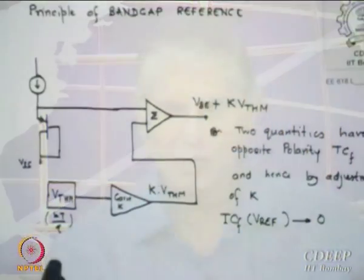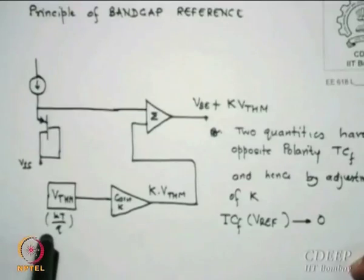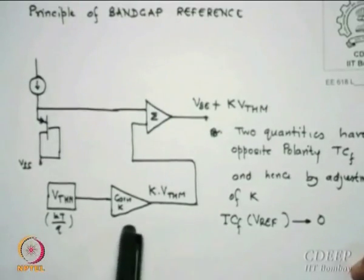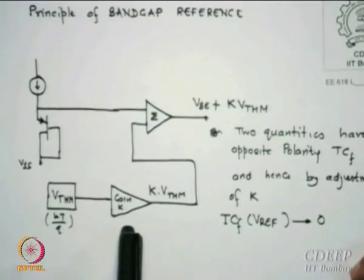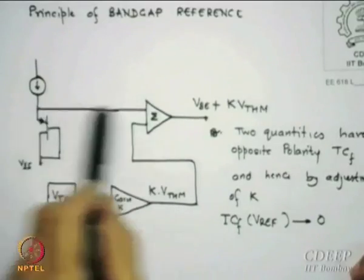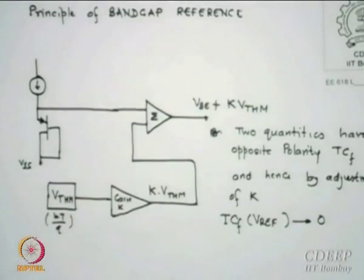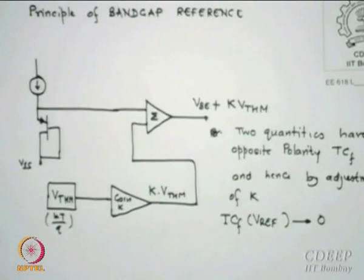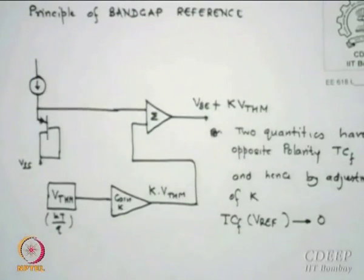Here is the band gap reference, which is most important. The principle is: take some KT/Q source (V_thermal), multiply by a gain factor K to get K*V_thermal, then add it to VBE through an adder. The output is VBE + K*V_thermal. This is the principle of the band gap reference.